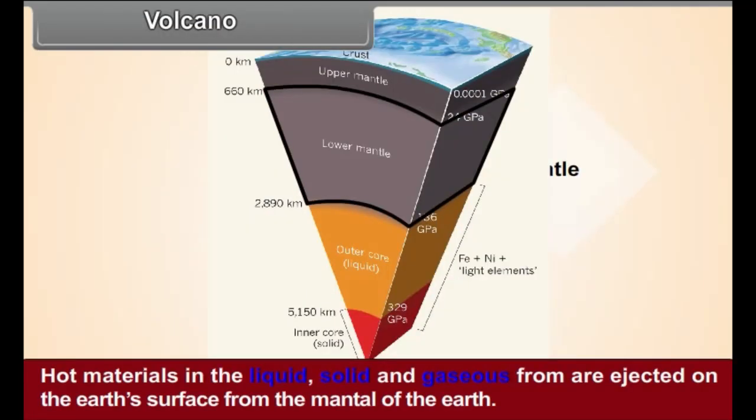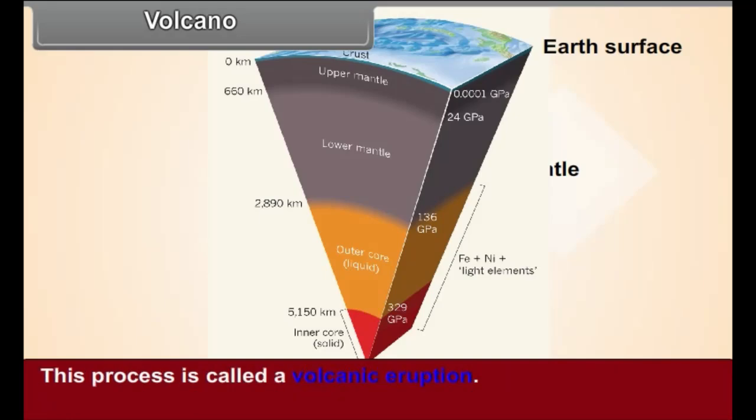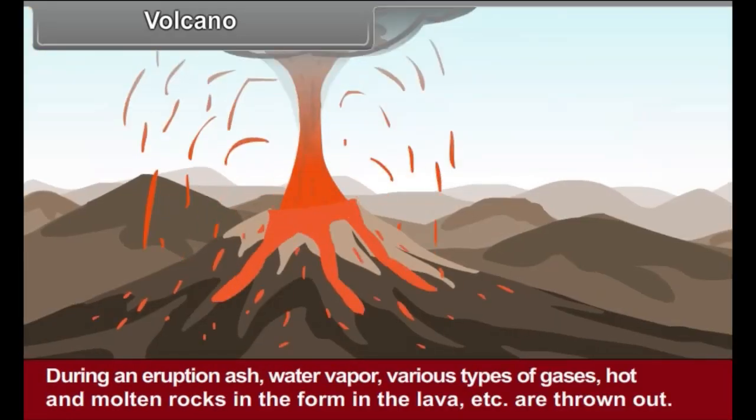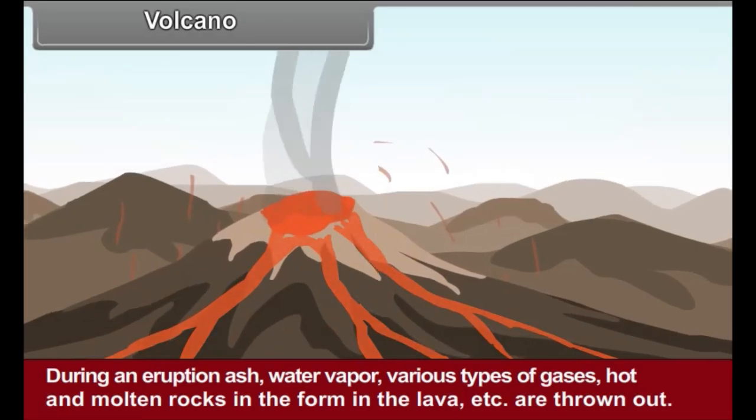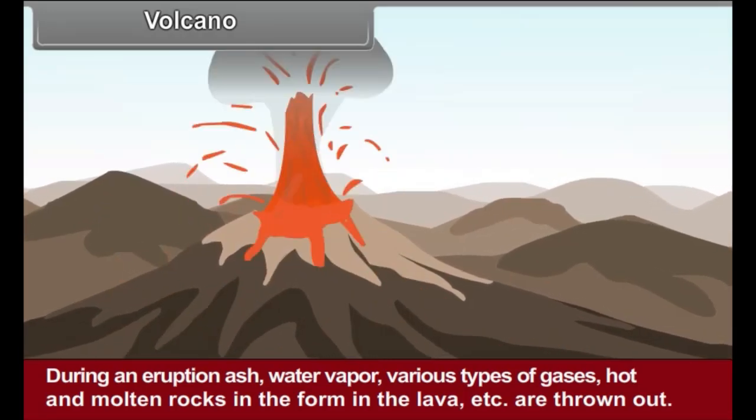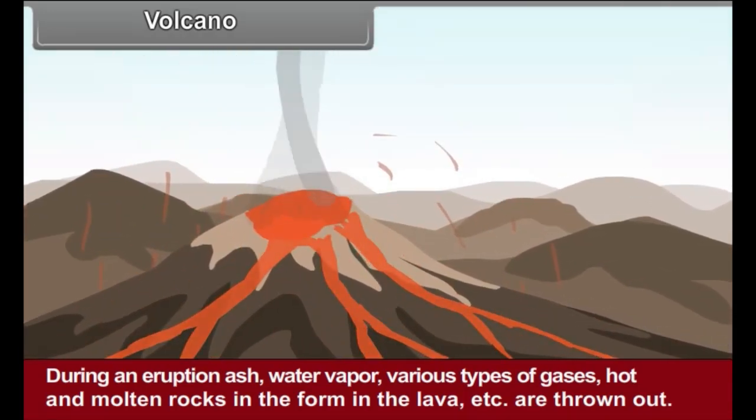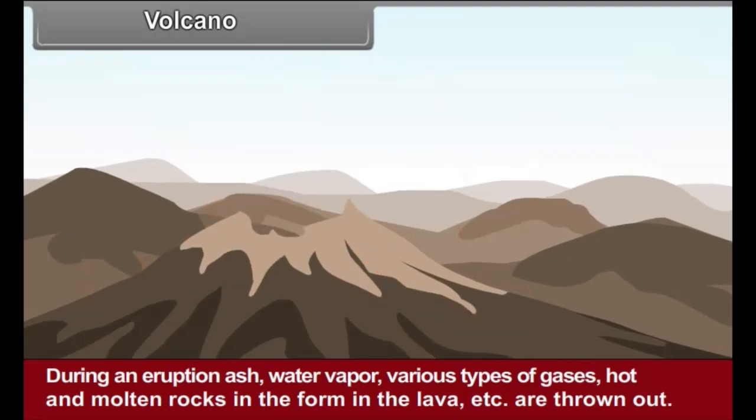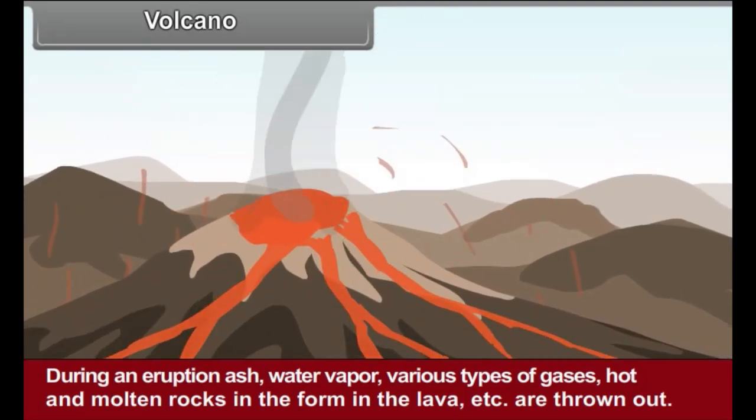Volcano. Hot materials in the liquid, solid and gaseous form are ejected on the earth's surface from the mantle of the earth. This process is called a volcanic eruption. During an eruption, ash, water vapor, various types of gases, hot and molten rocks in the form of lava, etc. are thrown out.